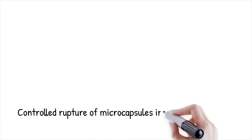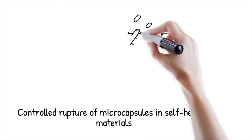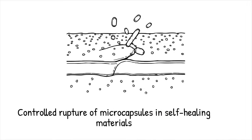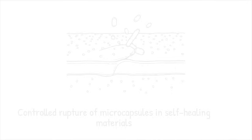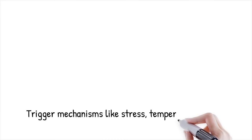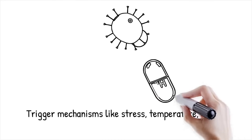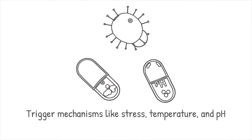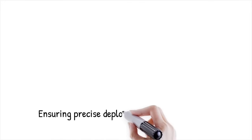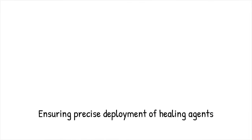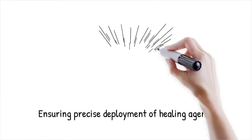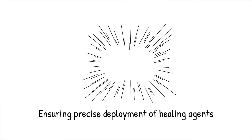The effectiveness of self-healing materials relies on controlled microcapsule rupture when mechanical damage occurs. Rupture triggers include mechanical stress, crack formation, thermal changes, and pH variations. The internal pressure of the capsule and the brittleness of the shell material determine activation sensitivity, ensuring healing agents are deployed precisely when needed.